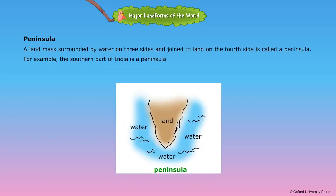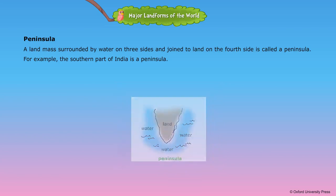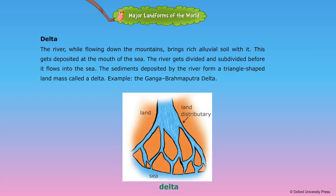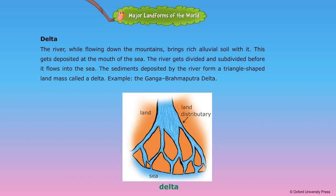Peninsula. A landmass surrounded by water on three sides and joined to land on the fourth side is called a peninsula. For example, the southern part of India is a peninsula. River. A large stream of water is called a river. Delta. The river, while flowing down the mountains, brings rich alluvial soil with it. This gets deposited at the mouth of the sea. The river gets divided and subdivided before it flows into the sea. The sediments deposited by the river form a triangle-shaped landmass called a delta. Example: the Ganga-Brahmaputra delta.